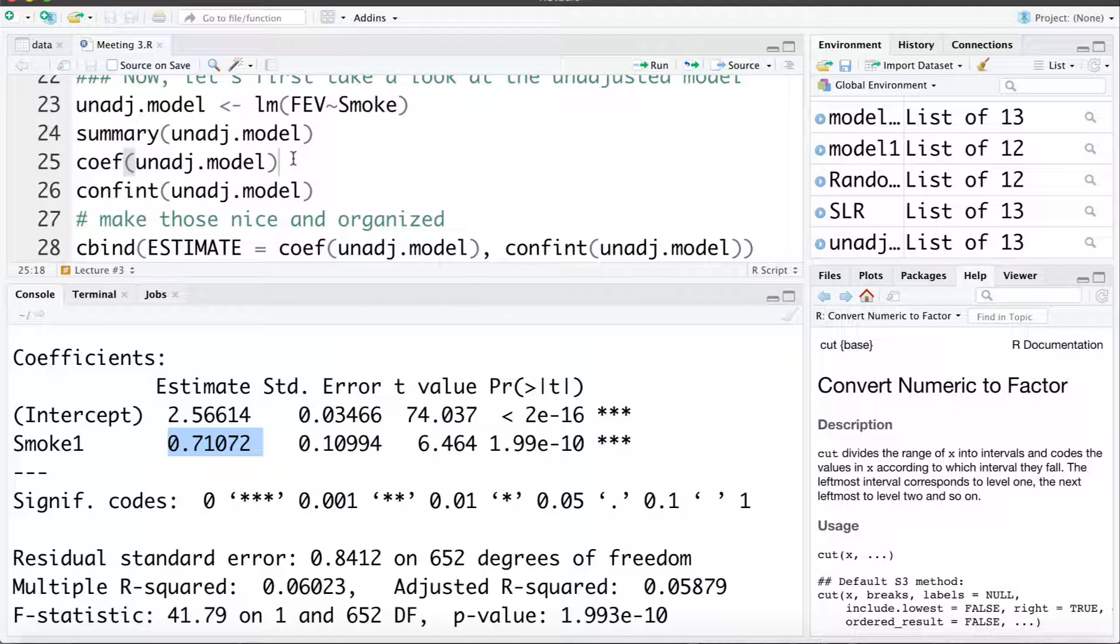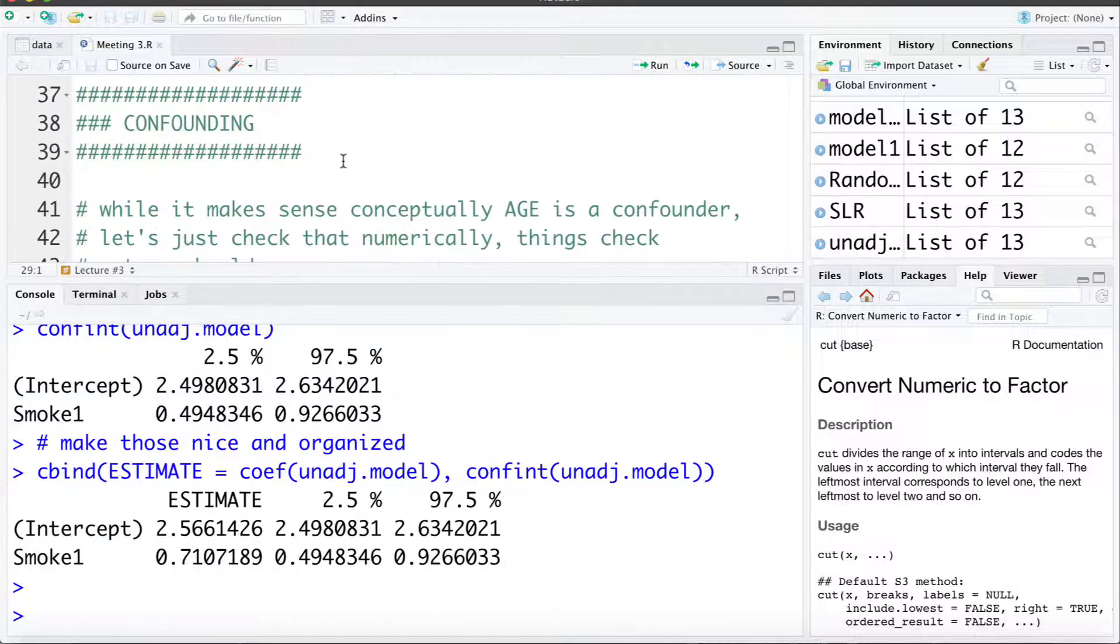So we're going to look at adjusting for age as a potential confounder. We already said that conceptually age makes sense as being a confounder. In the previous video we looked at the diagram for the association between age, smoking and FEV and it made sense.